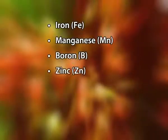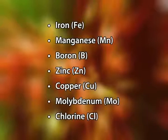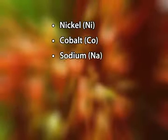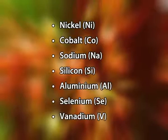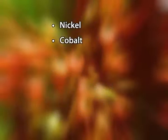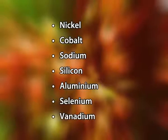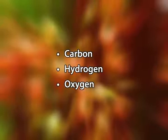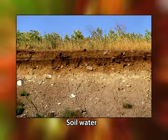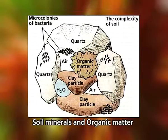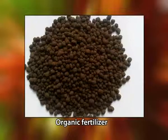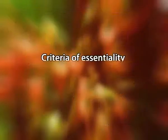Micronutrients include iron, manganese, boron, zinc, copper, molybdenum, chlorine, nickel, cobalt, sodium, silicon, aluminium, selenium, and vanadium. Among these, nickel, cobalt, sodium, silicon, aluminium, selenium, and vanadium have been established as essential elements for some but not all higher plant species. Out of the 23 essential nutrients, carbon, hydrogen, and oxygen are derived from the atmosphere and soil water; the rest are supplied from soil minerals, soil organic matter, or fertilizers.